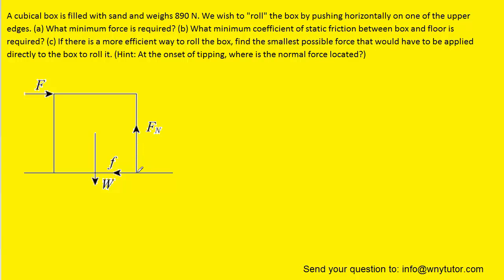Notice that the normal force and the frictional force are acting at this corner right here, because as the box just begins to roll, the only part of the box that is touching the surface is located at this point. There is no other contact between the box and the surface along this line right here — only at that corner will they still be touching as the box begins to roll forward.